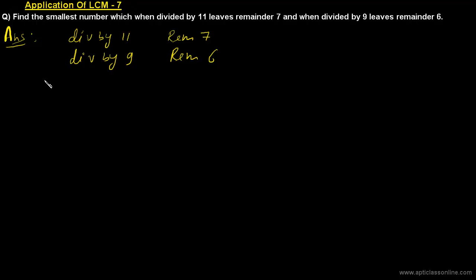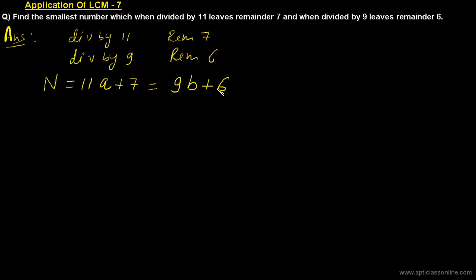Suppose the number is n. Since n when divided by 11 leaves remainder 7, we can write n as 11a + 7, where a is an integer. And since the same number when divided by 9 leaves remainder 6, it can also be written as 9b + 6. So n must satisfy both of these conditions, where a and b are integers.